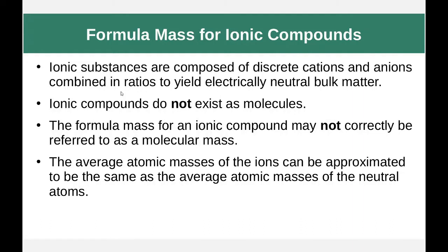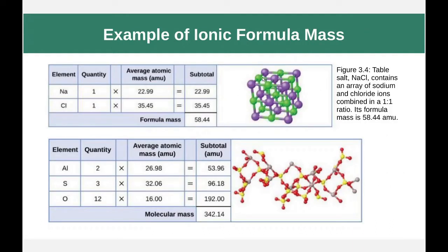Let's look at an example. Here we have sodium chloride, packed in a cubic structure. You can imagine this cube going on in every single direction to make up the sodium chloride you see at your table. The smallest repeating unit is always one sodium atom and one chlorine atom bound together. So our formula mass for sodium chloride is just that one sodium and one chlorine, multiplied by their average atomic masses and added together — 58.44 AMU.